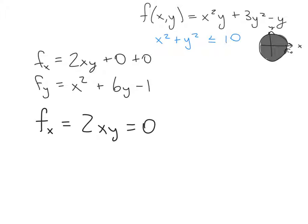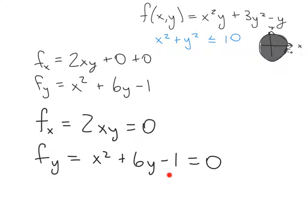Setting each to zero: f_x = 2xy = 0 and f_y = x² + 6y − 1 = 0. Note that I didn't simply set f_x equal to f_y. Although they're both zero at the points we're interested in, we have more information — we know each is individually equal to zero, so setting them equal to each other would lose information.